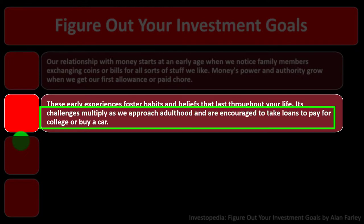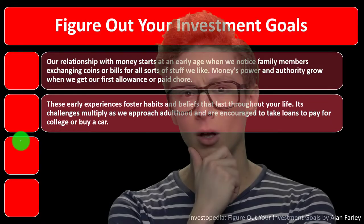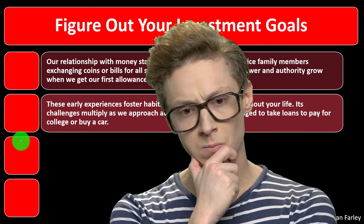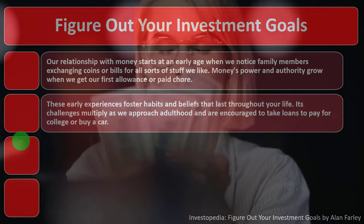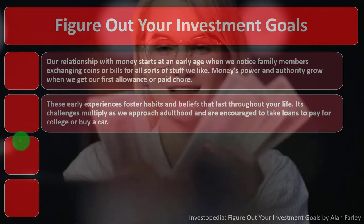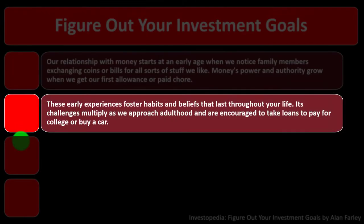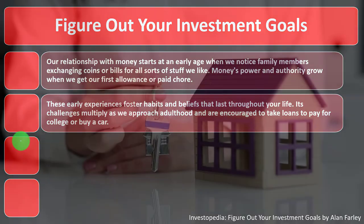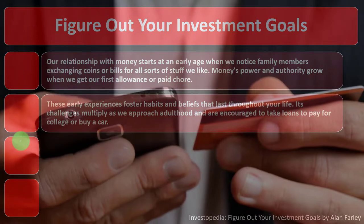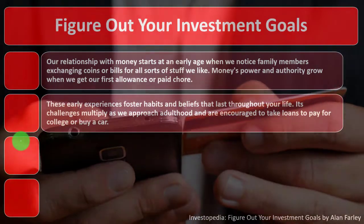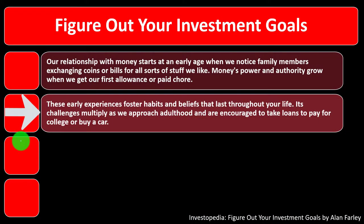The challenges multiply as we approach adulthood and are encouraged to take on loans to pay for college or buy a car. When we think about the average life cycle, our experience with money will typically be that at certain parts in our lives we might be taking on debt for things like college, a car, or a home, and then possibly later paying those debts down.